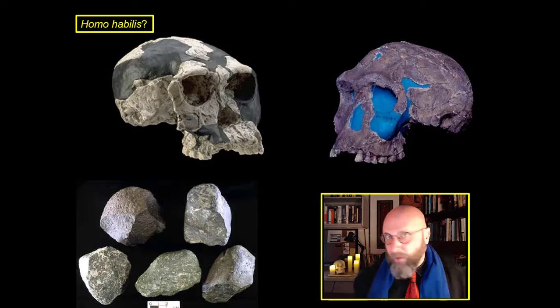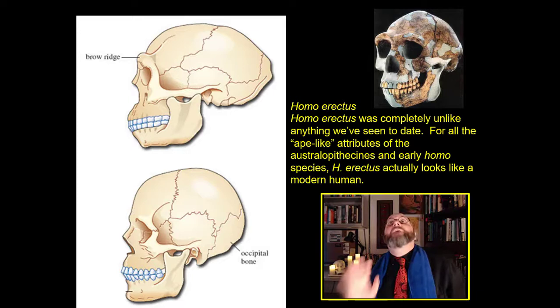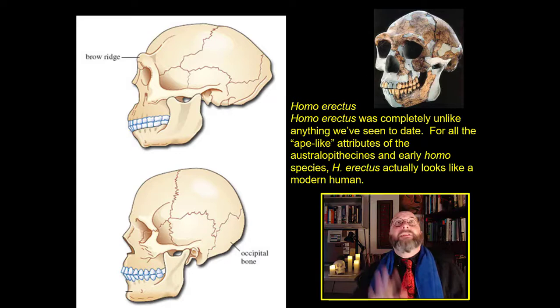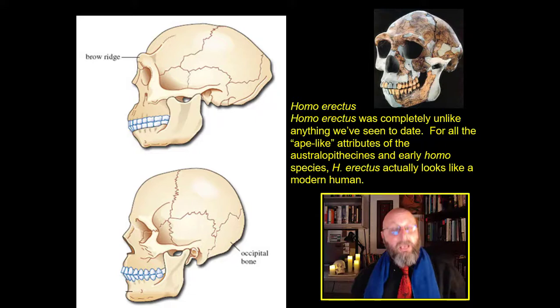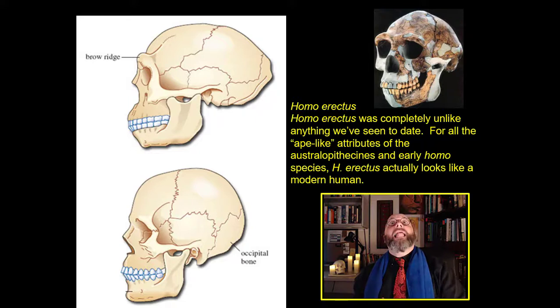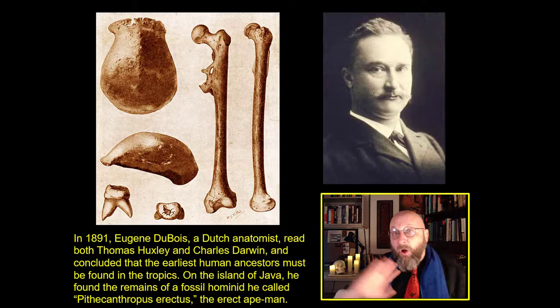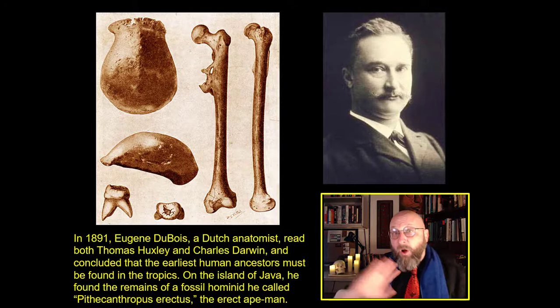We currently have two different hypotheses in debates about human evolution: australopithecine goes to Homo habilis and then Homo habilis becomes Homo erectus; or alternatively, an australopithecine goes directly to Homo erectus with a series of transitional forms labeled Homo habilis that don't really exist as a separate species. Now, here is Homo erectus — the ultimate ground ape of East Africa. Homo erectus is completely unlike anything we've seen to date. Homo erectus looks really, really like a modern human.